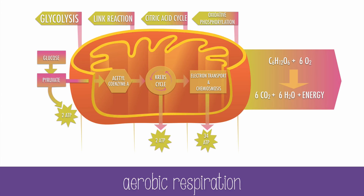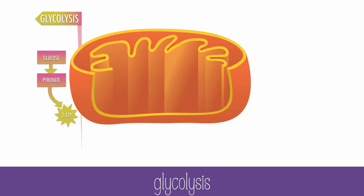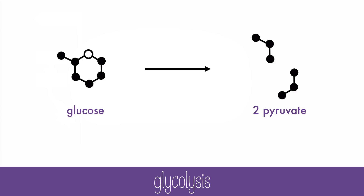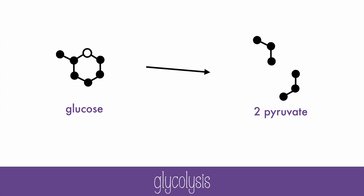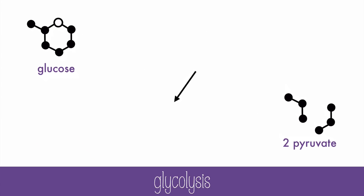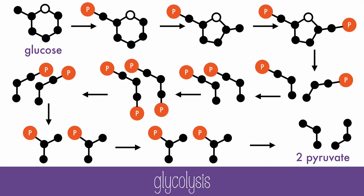Let's look at the first step, glycolysis, in more detail. Glycolysis will occur with or without oxygen in the cytosol of the cell. It's not just a simple reaction to form the two pyruvate molecules at the end — it's actually a 10-step process using 10 different enzymes.